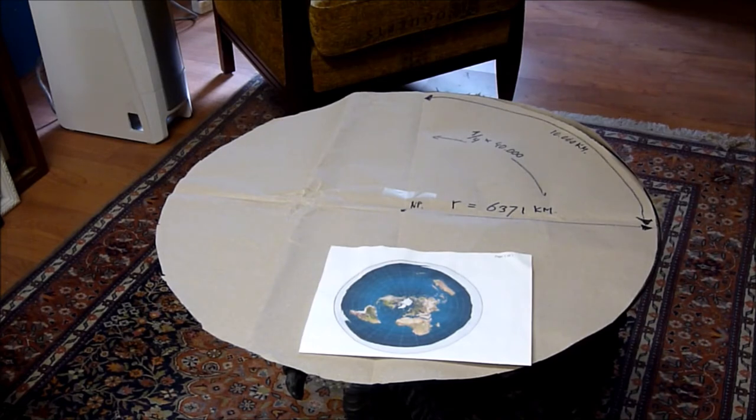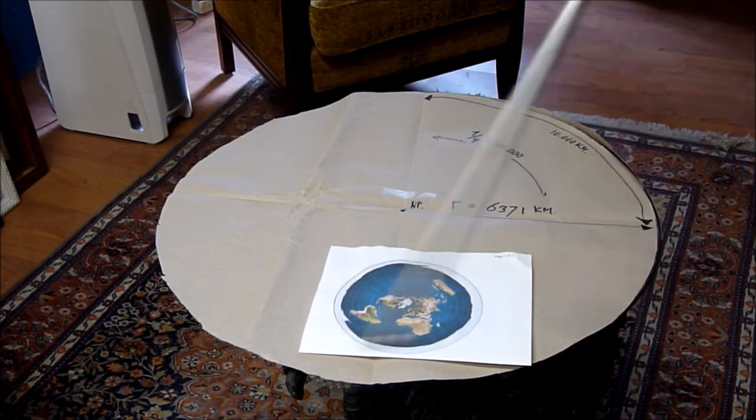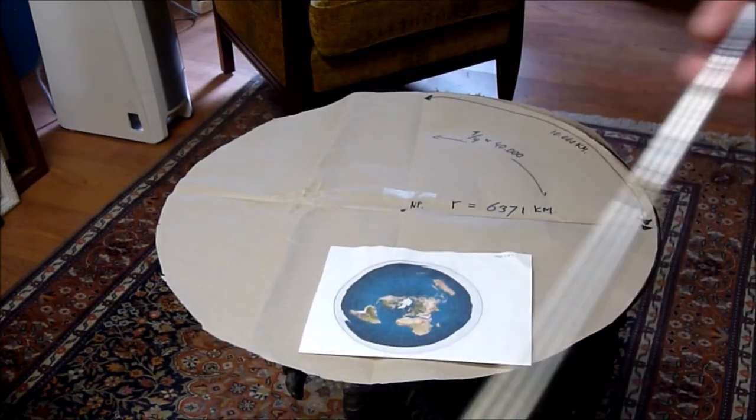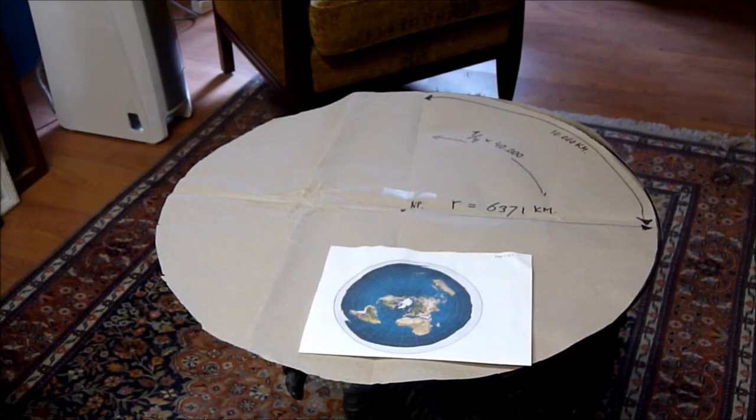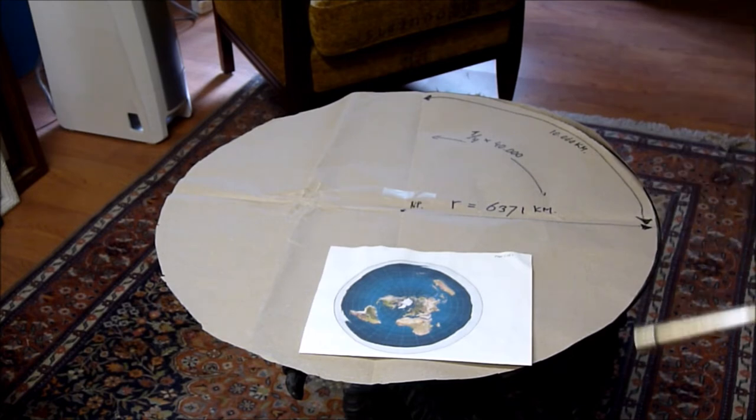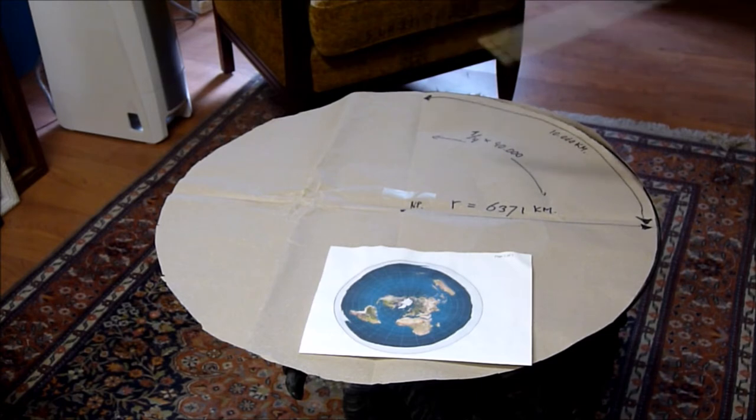Nou, de meter, daar hebben we ooit iets over afgesproken. In de tijd van Napoleon werkte hij met voeten en duimen en ellen. Daar konden we geen bal mee, we wilden naar een decimaal stelsel. En toen is dus onder de ruling van Napoleon afgesproken: laten we iets zoeken wat redelijk bestendig is qua afstand. Want je kan een stuk hout pakken of een stuk metaal, maar dat zit uit en krimpt in. Daar kan je geen goede standaard mee maken. En wij wilden echt wel die standaard goed hebben. En toen bedacht men: als we nou een 10 miljoenste deel van de afstand van de Noordpool pakken naar de evenaar van die aarde, dan hebben we zeg maar Gods eigen creatie gebruikt als de basis voor de standaard.